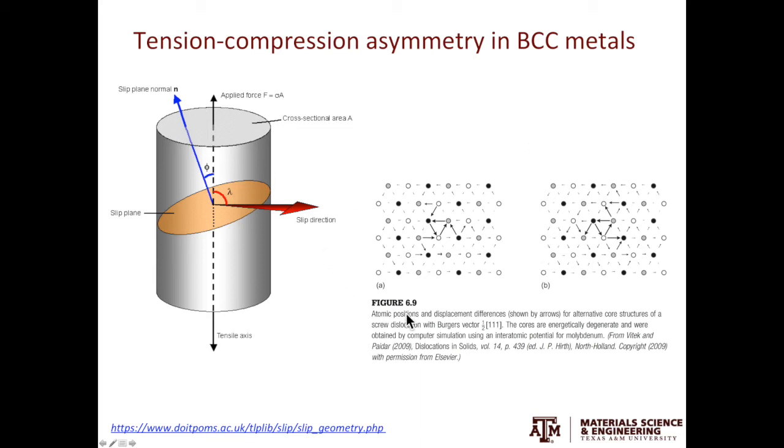This is different for BCC metals. BCC screw dislocations have a three-fold symmetry non-planar core. The normal component of the stress affects the dislocation core shape. If the stress is tensile, the core is stretched and the dislocation moves more easily. If the stress is compressive, the core is squashed and the dislocation moves with more difficulty.